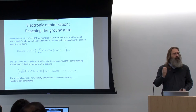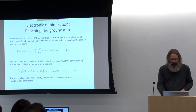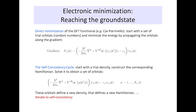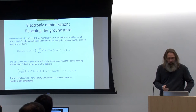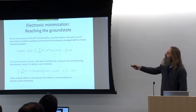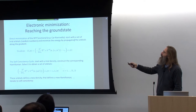Let's now discuss electronic minimization. We have spoken about the fact that these are the orbitals we want to determine. We said we have to solve the Kohn-Sham equations, and there are essentially two ways to do this.